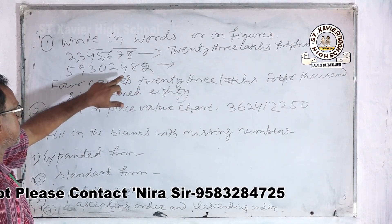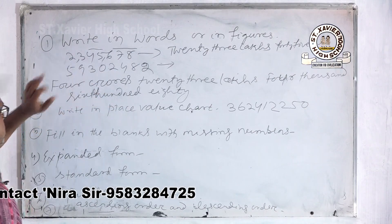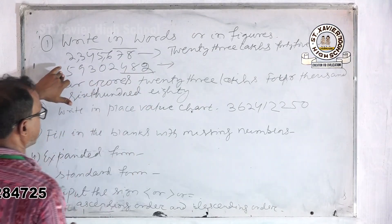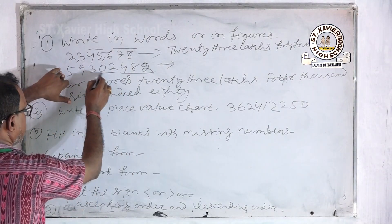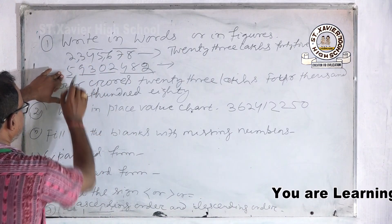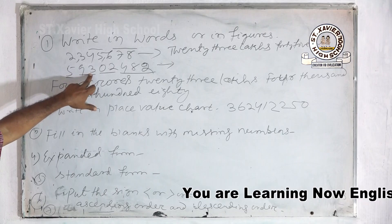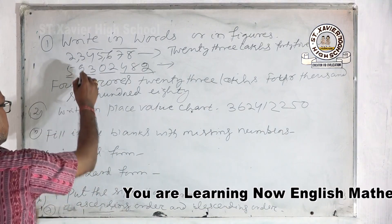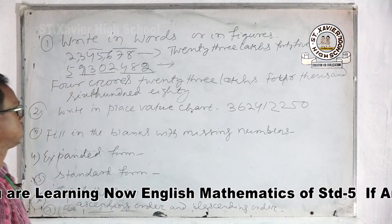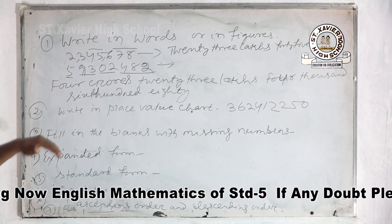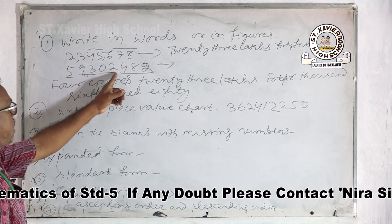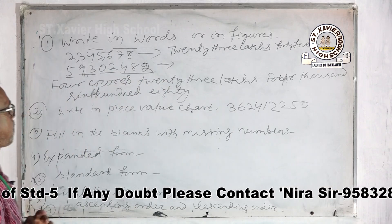The second number has eight digits. Reading it in the Indian way: five crores, ninety-three lakhs, two thousand, four hundred eighty-two. In the international way, it is fifty-nine million, three hundred two thousand, four hundred eighty-two.